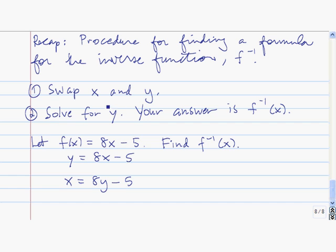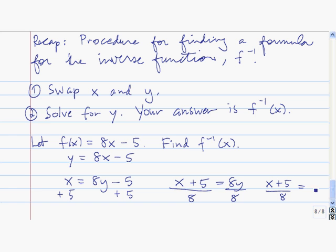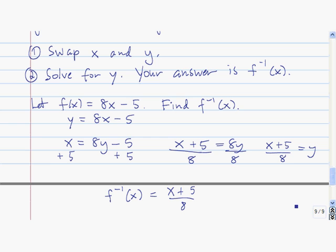Now we're going to solve this for y. To solve that for y, we're going to add 5 to both sides, so we have x plus 5 equals 8y. And now we divide both sides by 8, so we get x plus 5 over 8 is equal to y. This is our formula for f inverse. So that means that f inverse of x is equal to x plus 5 divided by 8.